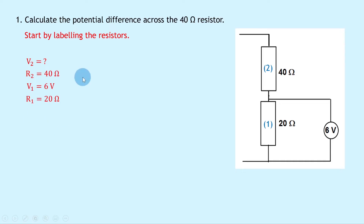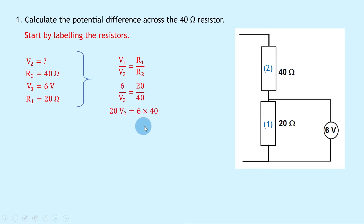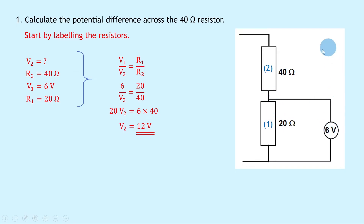Writing down our equation for potential divider circuits when the supply voltage is not known: V1 over V2 equals R1 over R2. Substituting in the numbers gives 6 over V2 equals 20 over 40. Cross multiplying gives 20·V2 equals 6 times 40, which is 240. Dividing by 20 gives V2 equal to 12 volts. A quick check: because R2 is twice as big as R1 (40 vs 20 ohms), and V1 was 6 volts, we'd expect V2 to be twice as big — which is 12 volts. Confirmed.